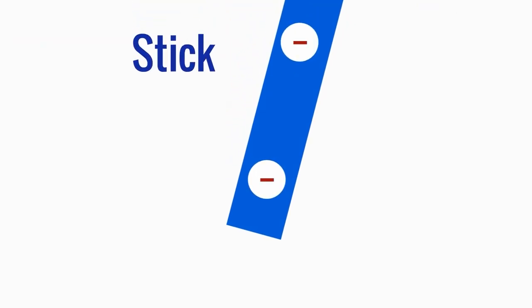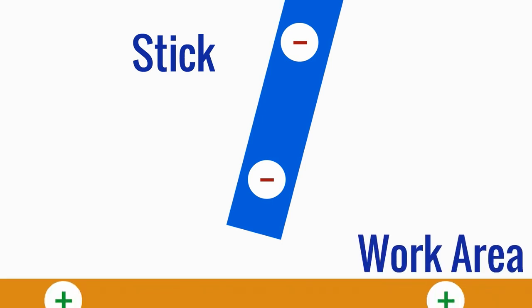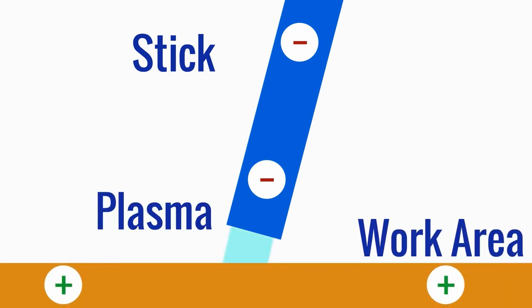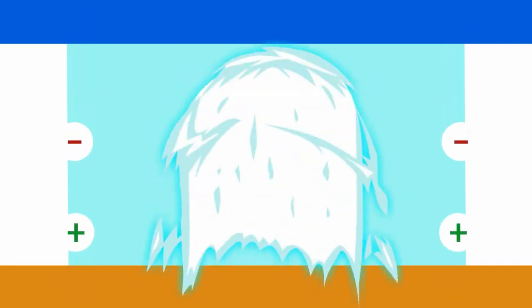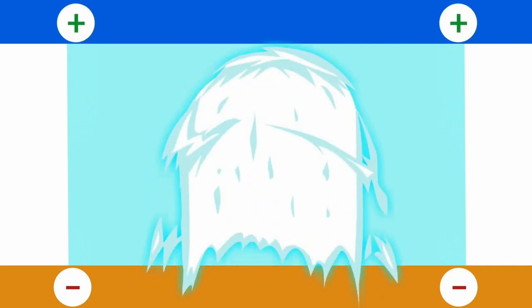The stick portion, or cathode, is negatively charged. The metallic weld area, or anode, is positively charged, and the plasma serves as a pathway for the electrons to travel through. This is where the electric arc is also. When an arc is struck, the negative electrons from the cathode travel down to the anode. Conversely, the anode's positive ions shoot up toward the negative cathode, all centered around the plasma.